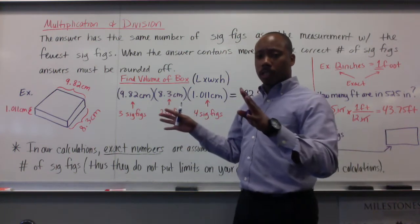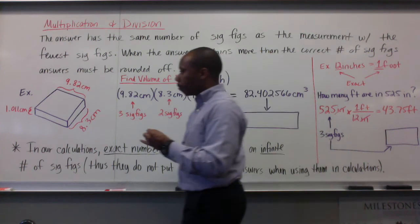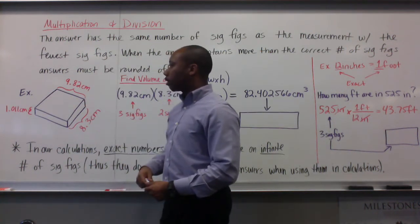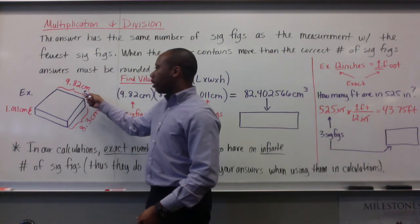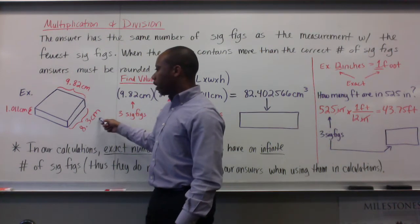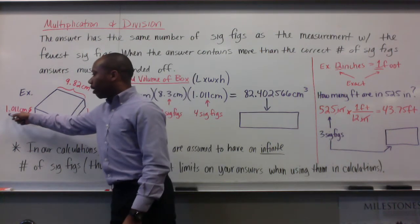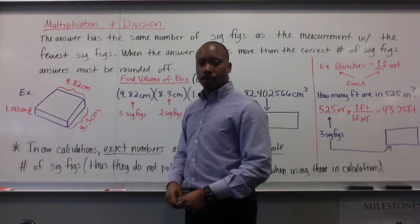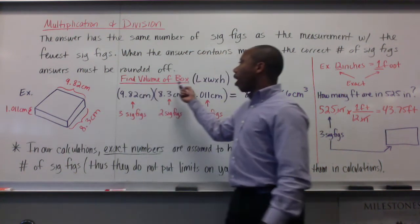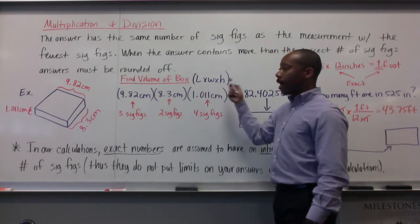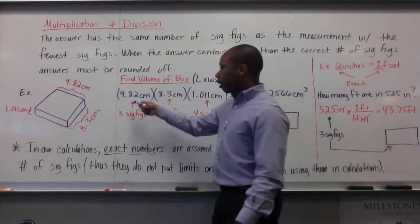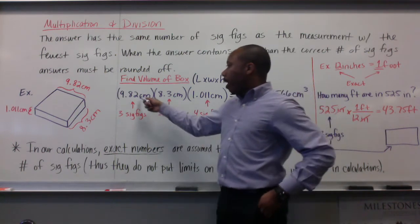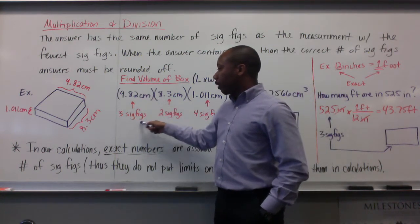Here's our example. This board is kind of cluttered, so please follow along. We're going to measure the volume of this box. My length is 9.8 centimeters, my width is 8.3 centimeters, my height is 1.011 centimeters. To find the volume of a box, we use length times width times height. My length has three significant figures.